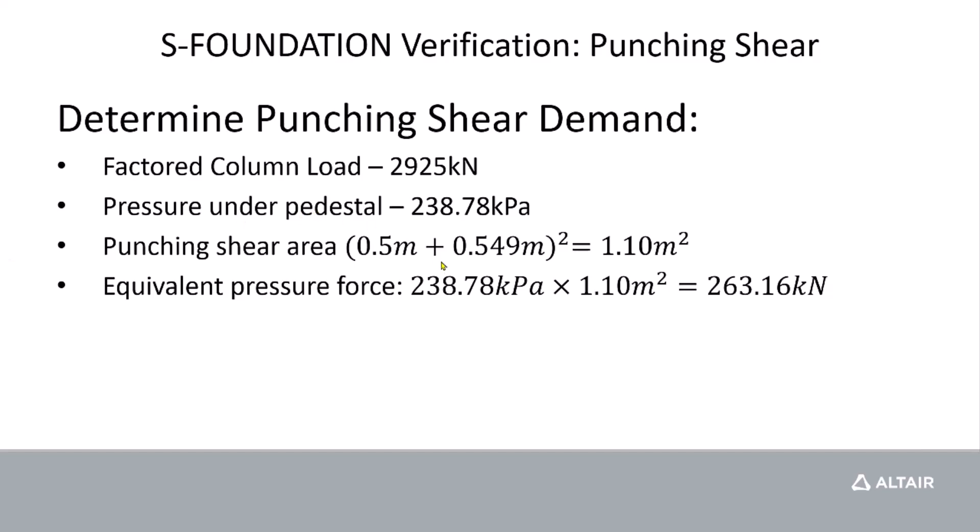So we can calculate the equivalent pressure force that's pushing up on the pad to equal 263.16 kN. That's basically just the pressure under the pedestal multiplied by the punching shear area. And if we subtract this value from our factored column load, we can find the equivalent demand force. And that equals 2661.84 kN.